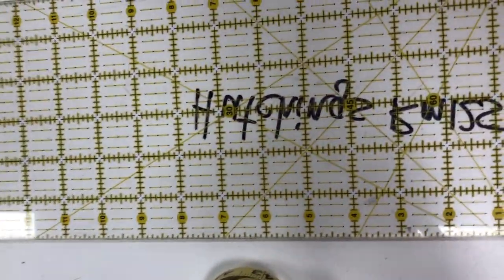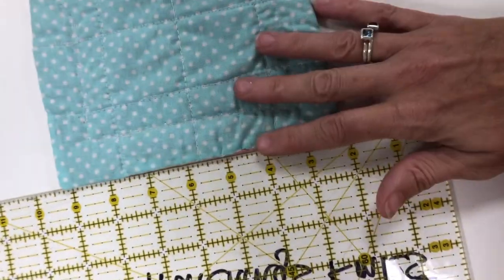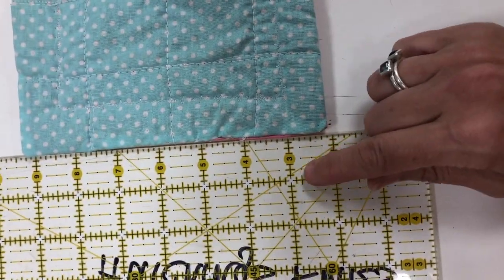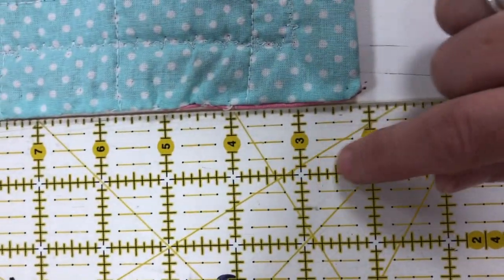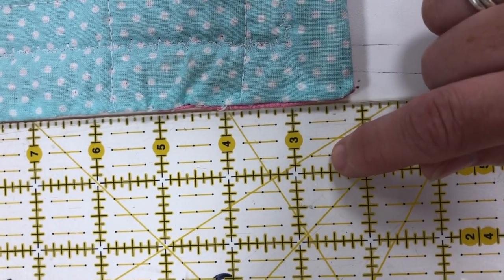For example, let's say that I wanted to put a straight line on this hot pad. Each one of these squares equals an inch and then you can see the little lines in between. So there's a halfway and then a quarter and then a quarter on this side.